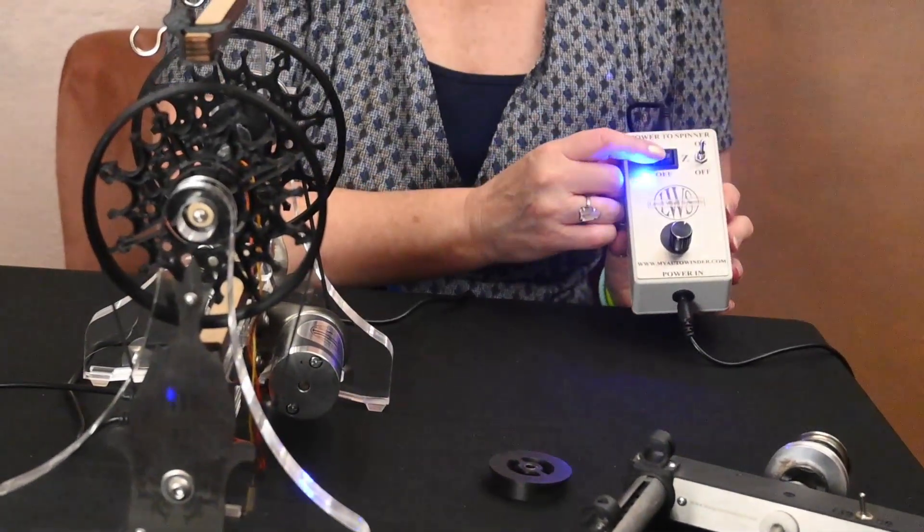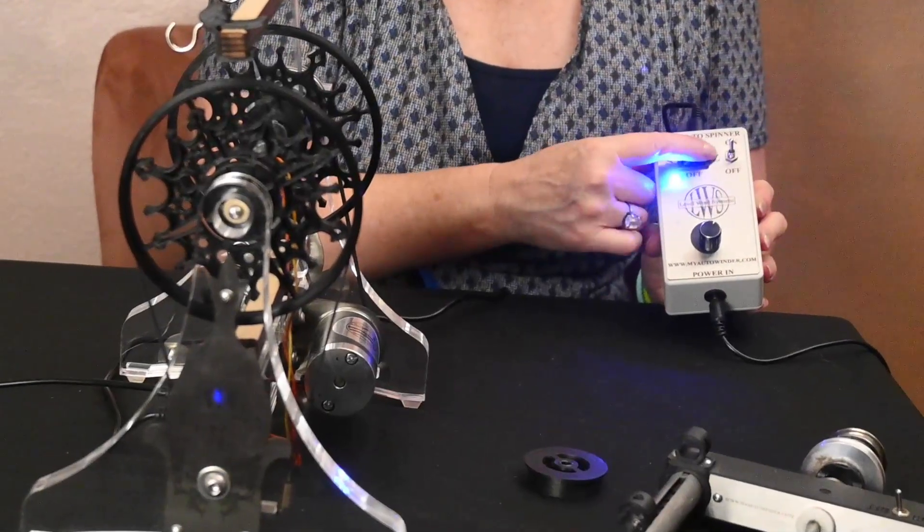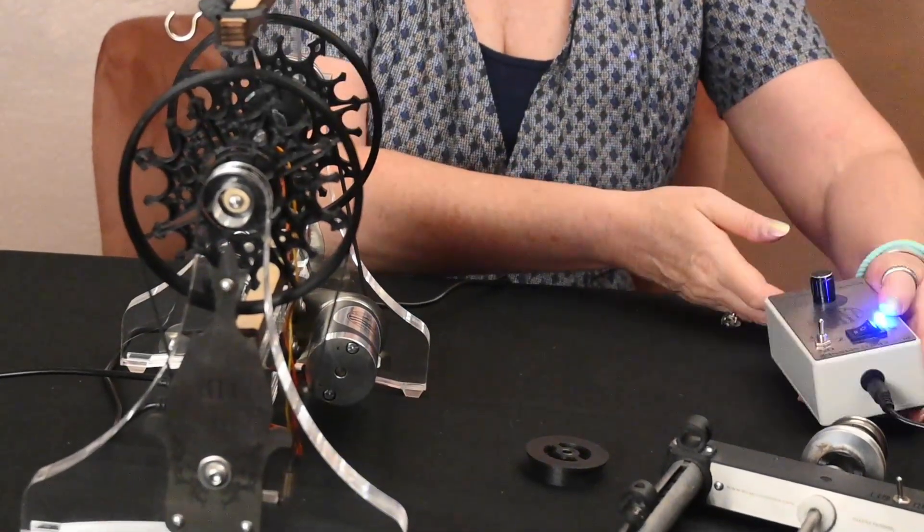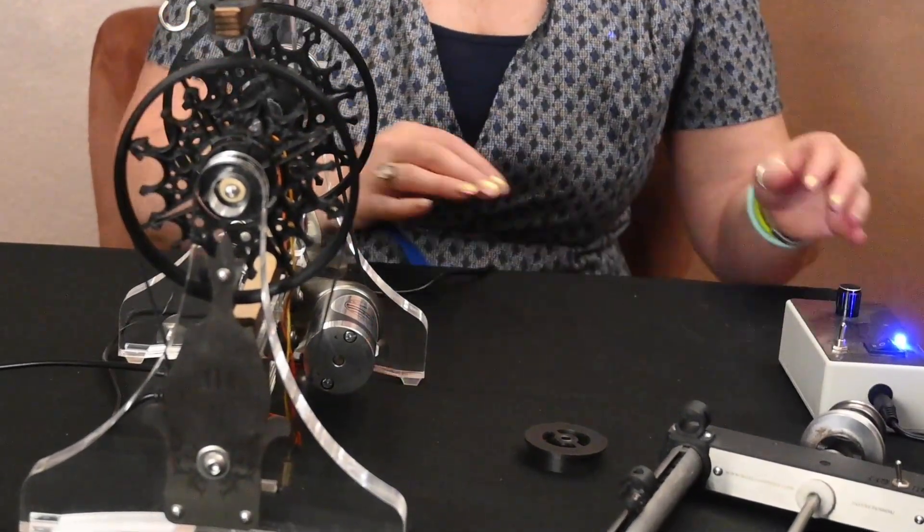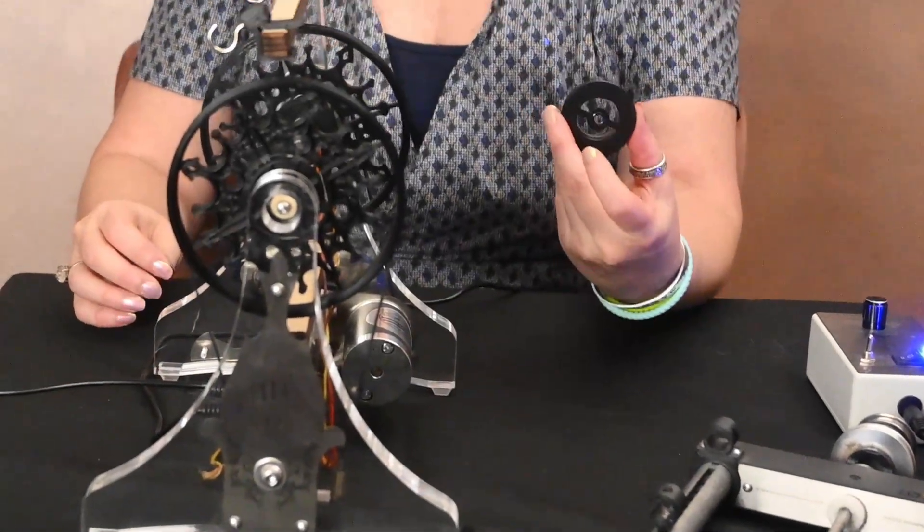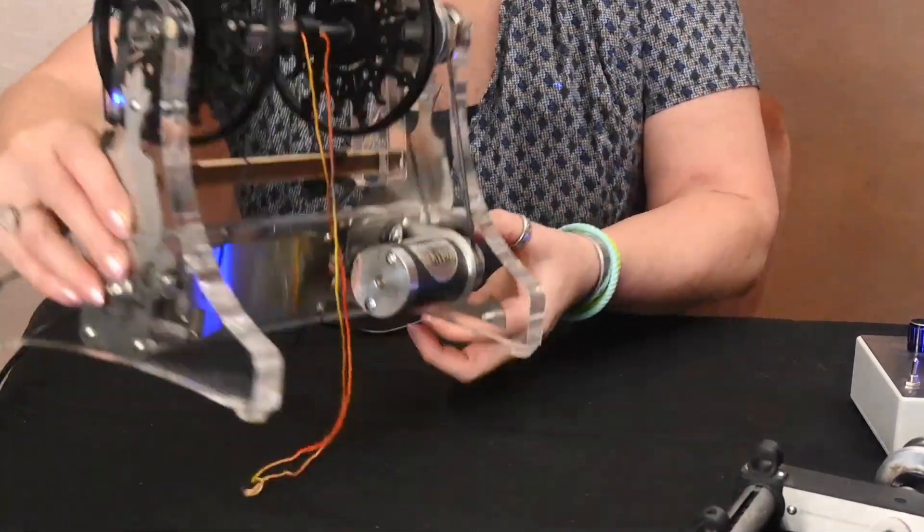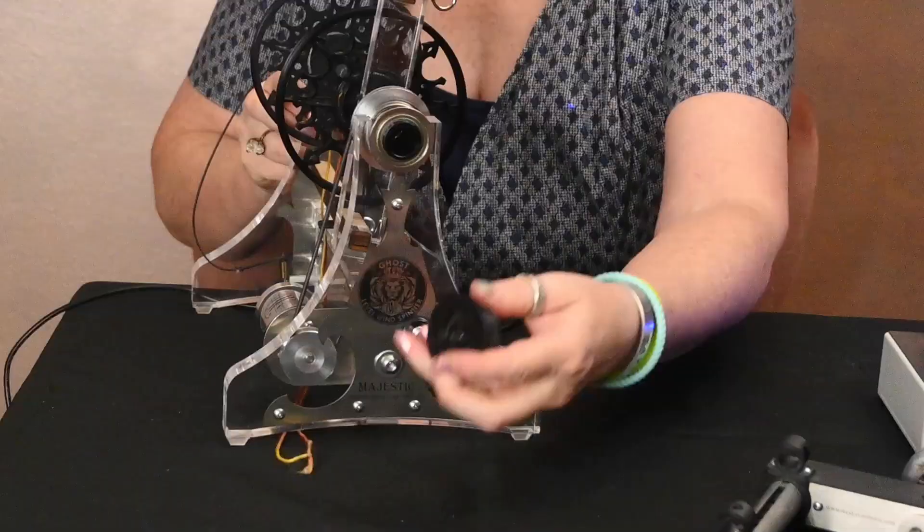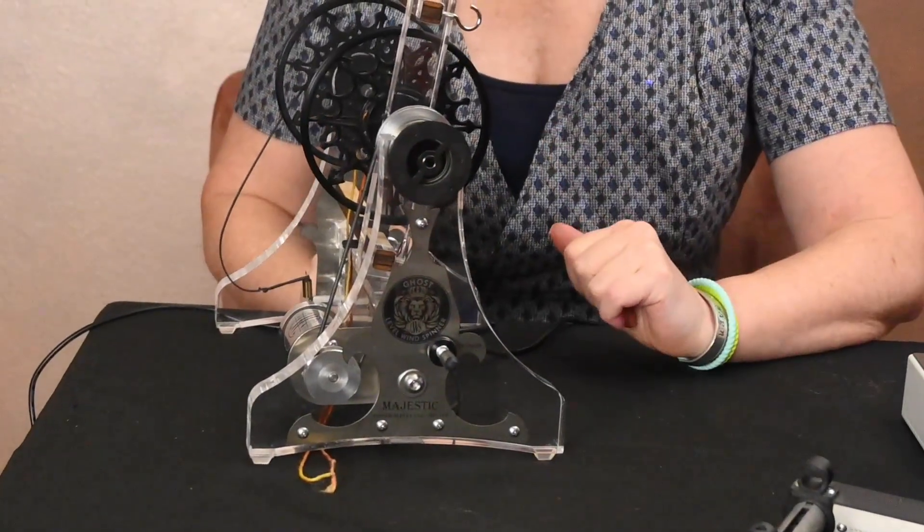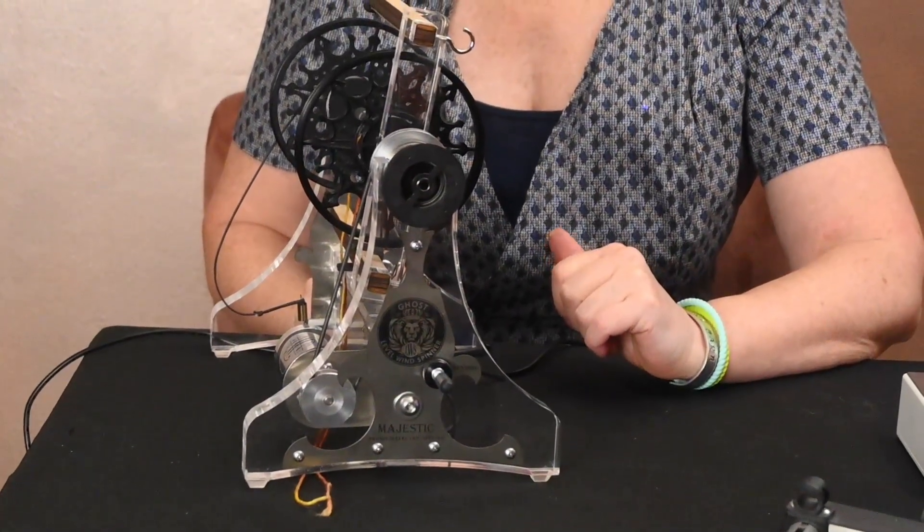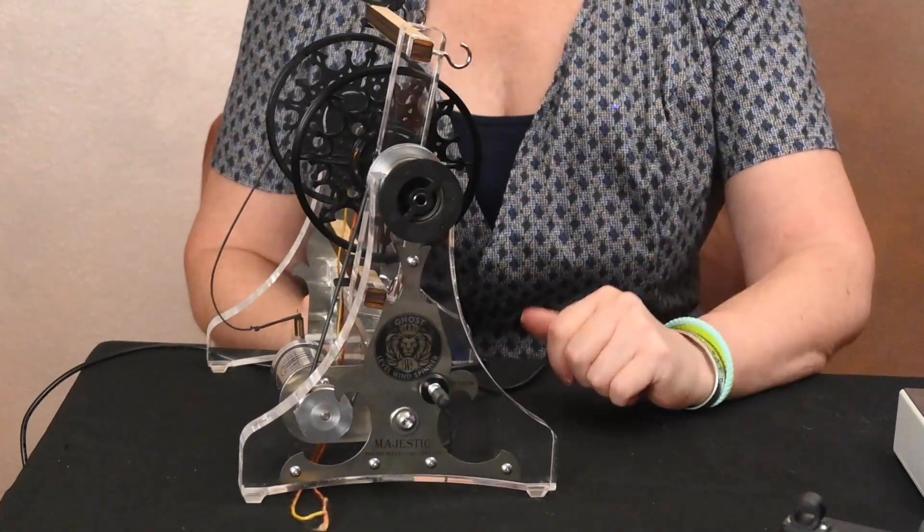You have your standard S, neutral, and Z twist for a single. I'm going to start with the Z twist. And then there is the optional orifice reducer as well and all that does is it's magnetic and it just slips right on. That is the manual setup.